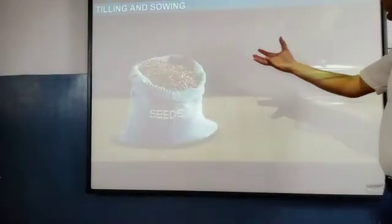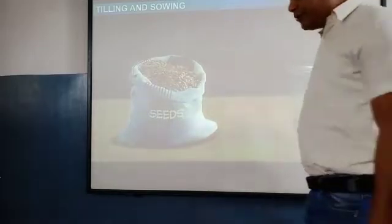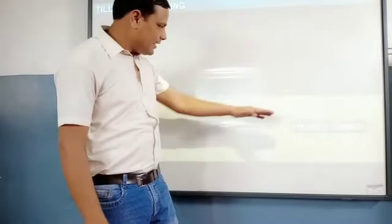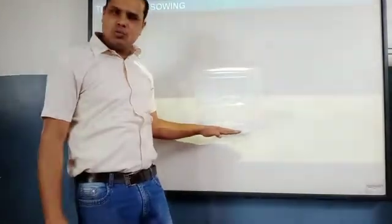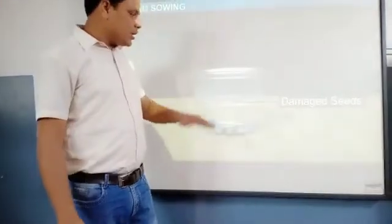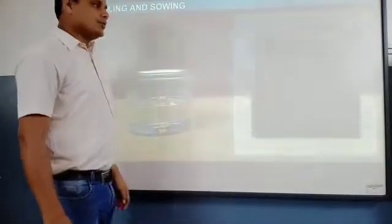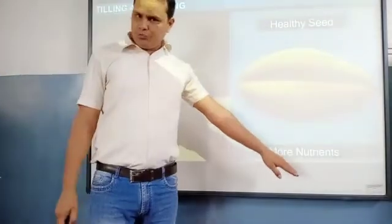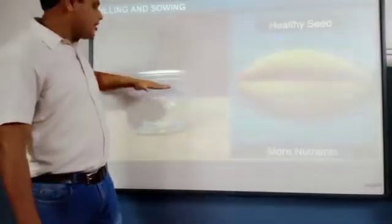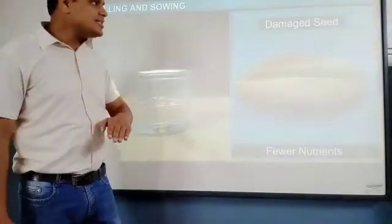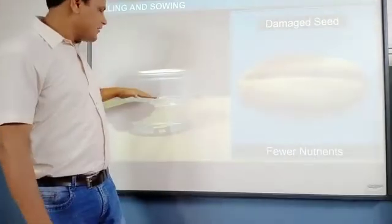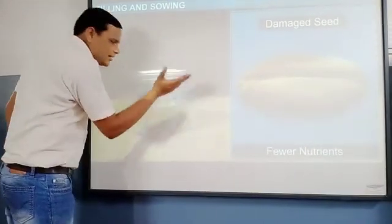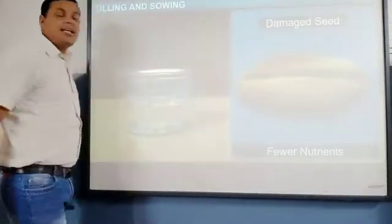When we put seeds in water, we will see that healthy seeds settle down to the bottom, while unhealthy seeds float on the surface. Healthy seeds contain more nutrients compared to unhealthy seeds which contain fewer nutrients. So unhealthy seeds float on top and healthy seeds settle at the bottom.